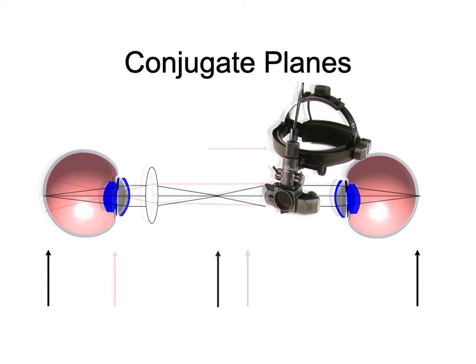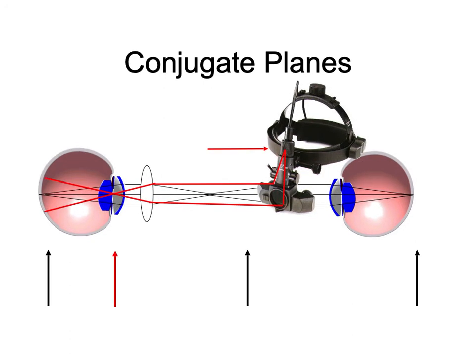There's another set of conjugate planes with the indirect: the light filament and the patient's pupil, because we're trying to get all rays of light through the patient's pupil. In this case, we're using the 20-diopter lens as a condensing lens to get all the rays of light into the very small pupil. This is a second set of conjugate planes, shown in red.